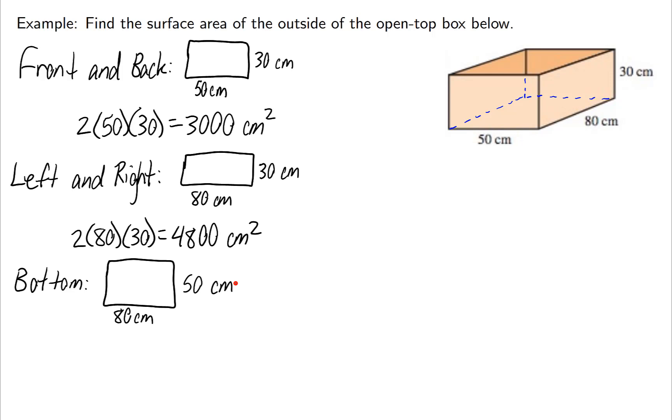For this one, if there was a top on the box, I would still multiply by 2. But notice that there is a bottom on the box only. It's an open top box this time. So now all I'll need to do is find the area of one of them,